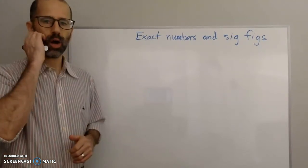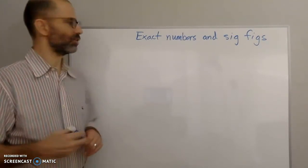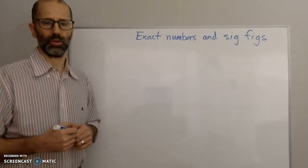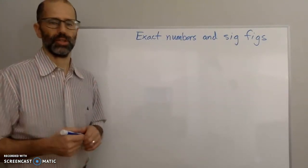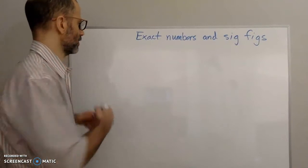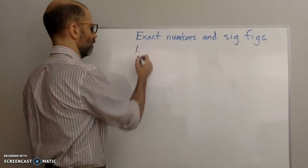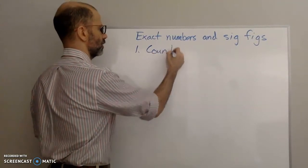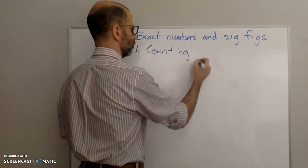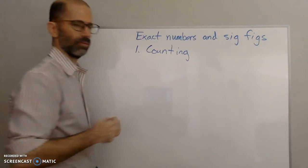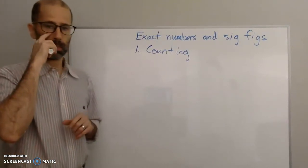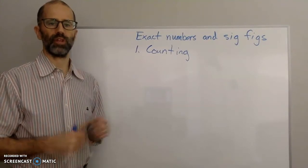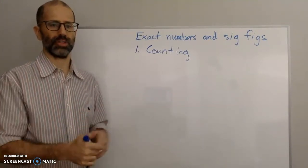So what are exact numbers? Exact numbers are numbers that you're not measuring — so they're not measurements. An example of an exact number would be counting numbers. These would be discrete numbers where all you did is count a number of things. You didn't measure it out, you just counted.